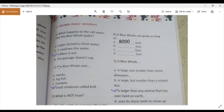Second question. The blue whale eats shark, big fish, humans. Those are not correct. Small creatures called krill. This is the correct answer.